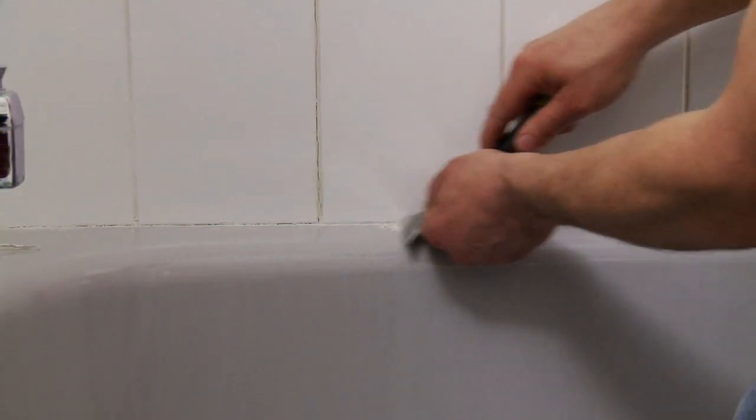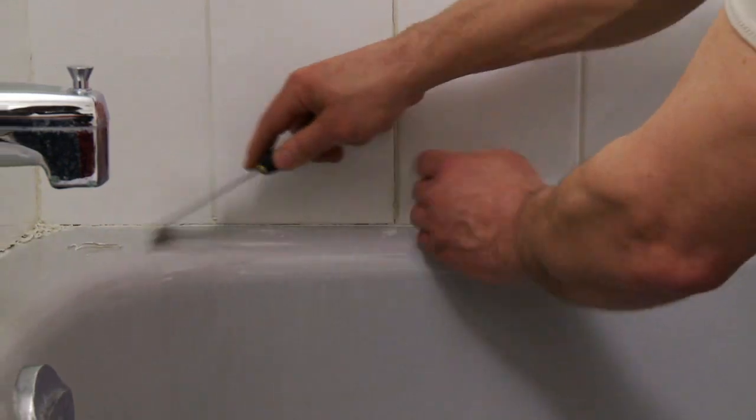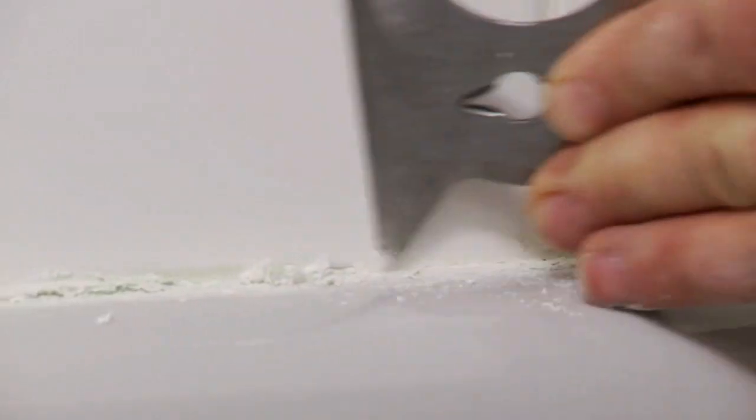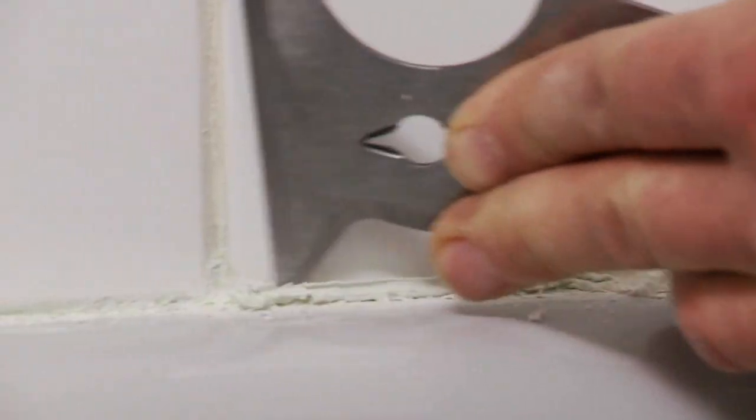First, remove the old caulking with a six-in-one painter's tool. You can use caulk removers or softeners to help the process, but read the warning labels carefully, as the softener could soften or damage surrounding plastics.